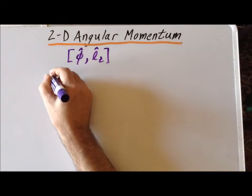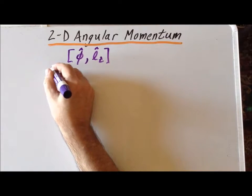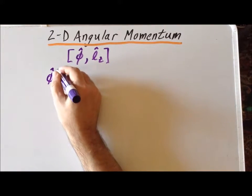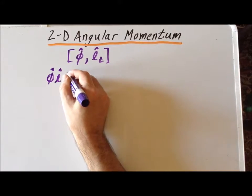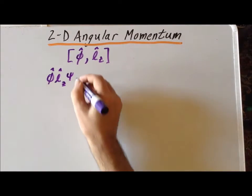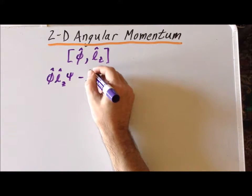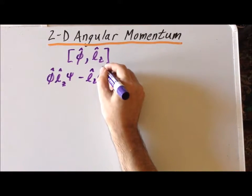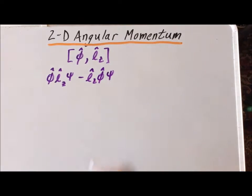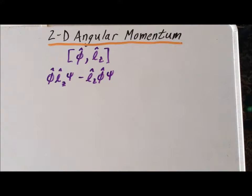Recall that the commutator is the expression we get if we have the operators act upon a wave function in both possible orders, and then we subtract the results. If the commutator is found to be zero, then we say that the two operators commute. We can know them both simultaneously to essentially infinite precision, and they have a common set of eigenfunctions.